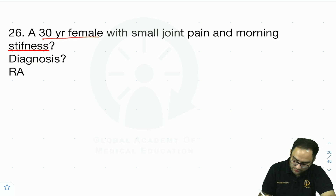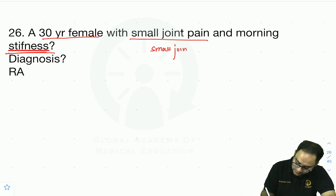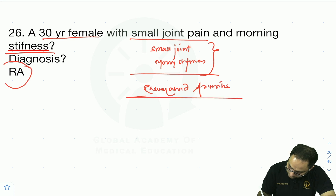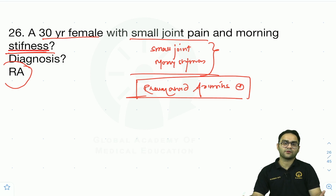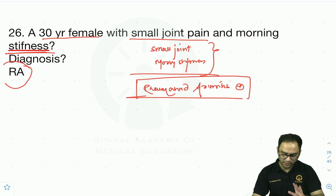A 30-year-old female with small joint pain and morning stiffness — this points toward rheumatoid arthritis. You should be familiar with RA deformities: swan neck, boutonnière, Z-line deformity, piano key movement. Also know cervical cord involvement, Caplan's syndrome, cardiovascular manifestations, and DMARD therapy for RA.